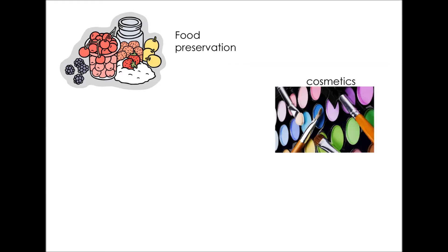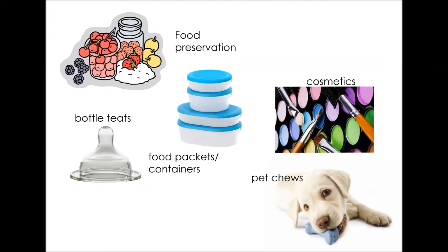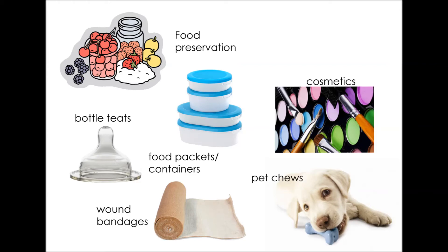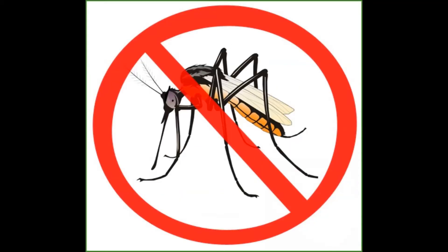to sterilize cosmetics, bottle teats for premature baby units, food packets or containers, pet chews to prevent transmission of salmonella, wound bandages and even feathers found in soft fixtures to stop bird flu. It is even used to make mosquitoes unproductive and progressively eliminates malaria by disturbing the breeding cycle. This could save thousands of people.